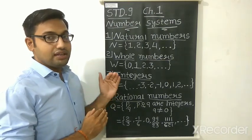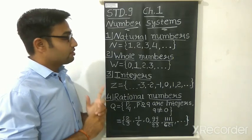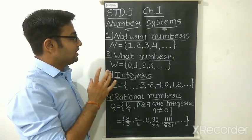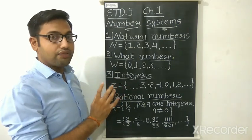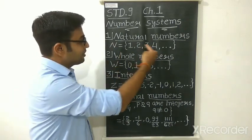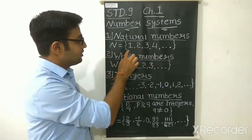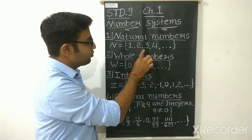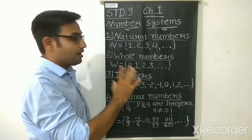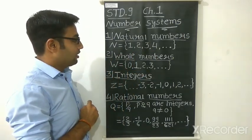So there is a classification of sets. First is natural numbers. The natural numbers set is denoted by capital N, and it contains 1, 2, 3, 4, 5, 6, up to infinite. All of these are members — also called elements — of the natural numbers set.